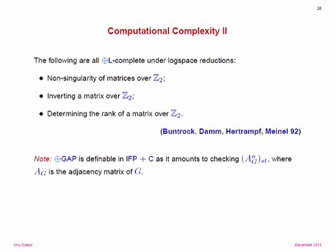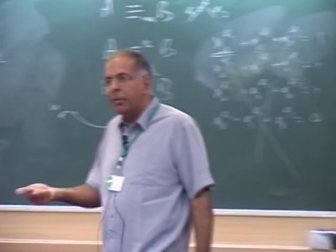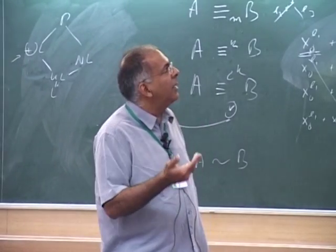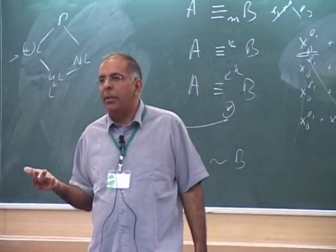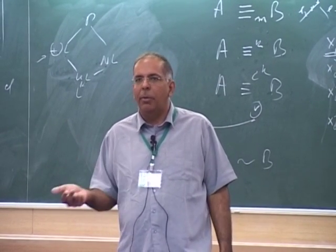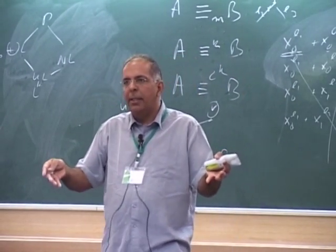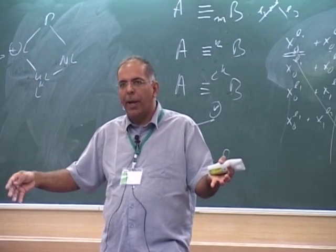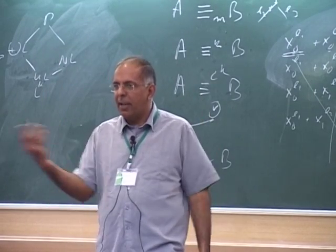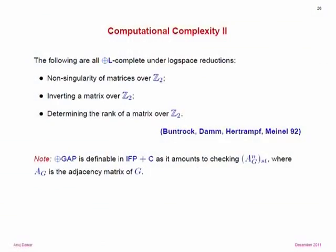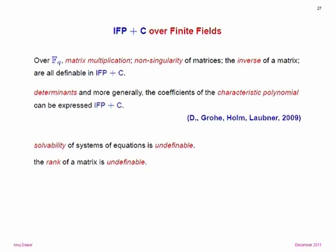But what we show is that in terms of definability in fixed-point with counting, there's a difference between these. I just told you the first two are definable: we can check whether a matrix is invertible and compute the inverse. But we can't determine the rank of a matrix, because if we could, we could check whether a system of equations is solvable — a system is solvable if the rank of the matrix is unchanged when you add the column on the right-hand side, because that has to be in the span of the left-hand side.